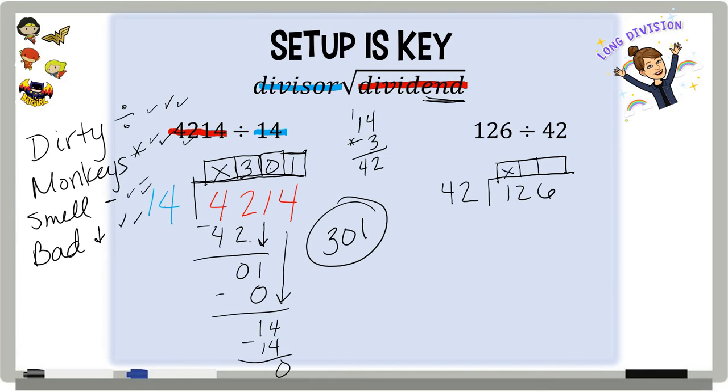42 cannot go into 1 and it cannot go into 12. So here we have a little bit of a more tricky time because we have to figure out exactly what number, how many times does 42 go into 126? Exactly what number will work? So we might have to guess and check. You cannot put anything bigger than a single digit number in that box. So if you say 10, that won't work. You have to have something that is 0 through 9.